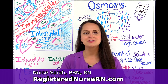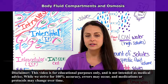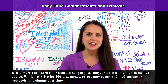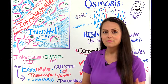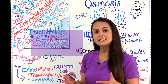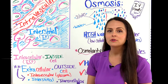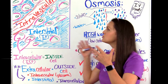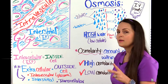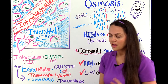Hey everyone, it's Sarah the Registered Nurse at Arian.com. In this video I'm going to be talking about body fluid compartments and osmosis. So let's get started. Now the average adult body is made up of about 60 to 70 percent water. So that is a lot of fluid within our body and this fluid has to be stored somewhere, and there are two main compartments that store this fluid that I want you to remember.